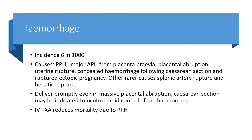The first cause of maternal collapse is haemorrhage, with an incidence of six in a thousand. Causes include postpartum haemorrhage, antepartum haemorrhage from placenta praevia, placental abruption, uterine rupture, concealed haemorrhage following a caesarean section, or ruptured ectopic pregnancy. Rare causes include splenic artery rupture and hepatic rupture. Prompt delivery helps manage massive haemorrhage, and IV tranexamic acid reduces mortality due to postpartum haemorrhage.